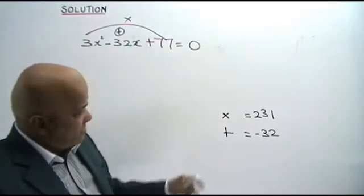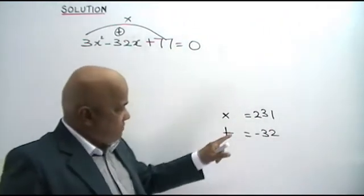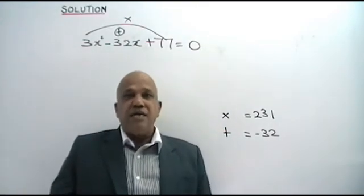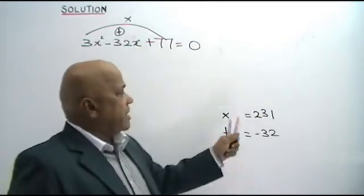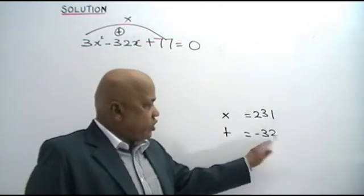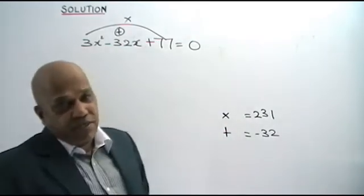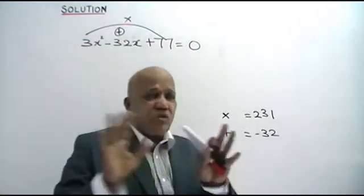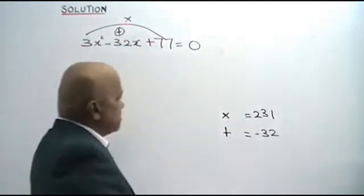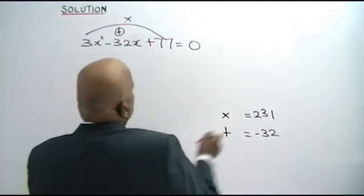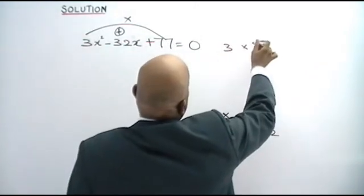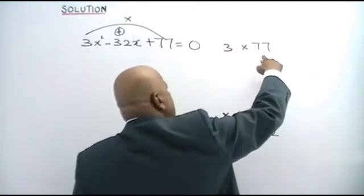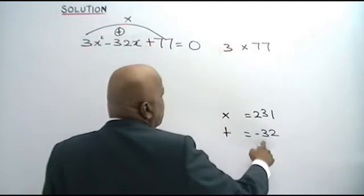Just by looking at this: product positive, sum negative — that means both the numbers are negative. Negative times negative is positive. Negative plus negative gives you negative. Now, this number is very big, but you don't have to worry. Watch — 3 times 77 is 231. Break this up so that you get two numbers which will give you this.